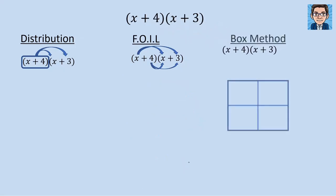Now let's take a look at the final method: the box method. Here we're going to take the first term, x plus 4, and put it along the top — so x and plus 4. Then we take the second term and put it along the side — so x and plus 3. Now we've got to fill in each box.